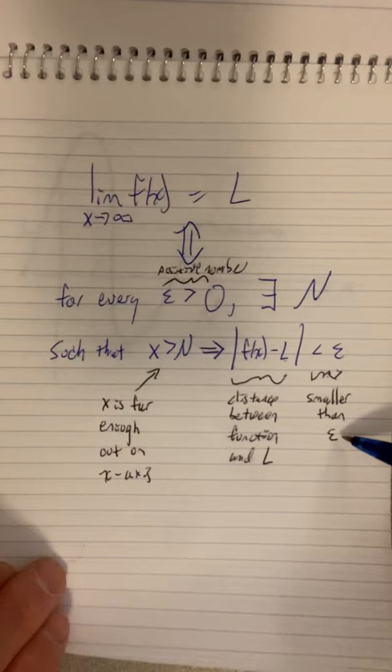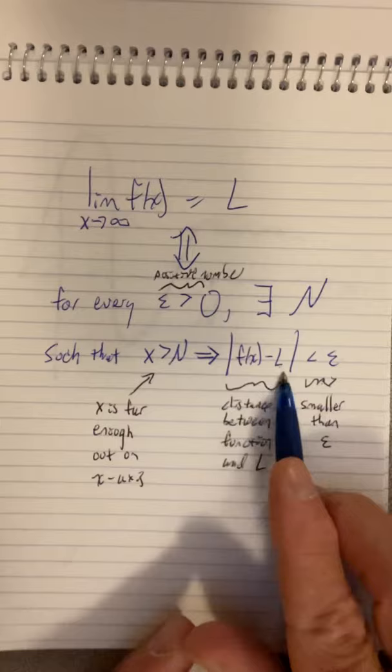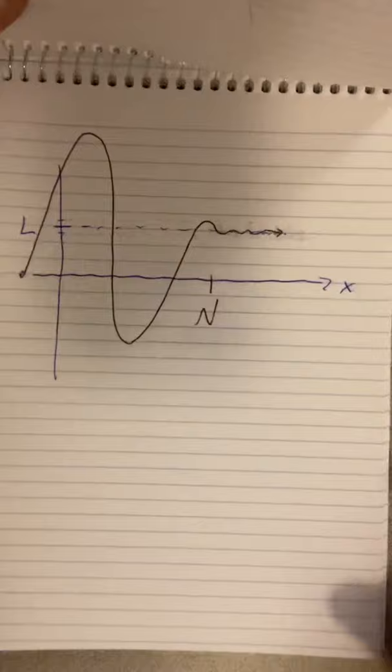Epsilon is then a proximity measure. We're saying that L and f, that distance between them, is smaller than this. So if this is a small number, then we're saying these two are close together. That's what the definition is saying. Let's look at it graphically.